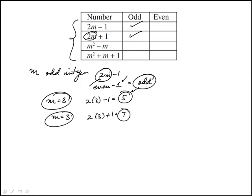6 plus 1 is 7. m square minus m. If m is odd, odd square minus odd. Odd square is odd, odd times odd. Odd minus odd is even. So this would be even.